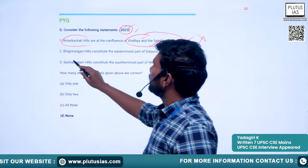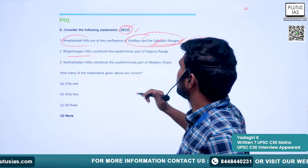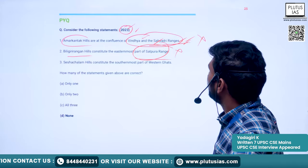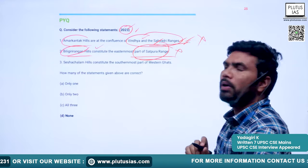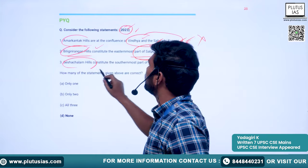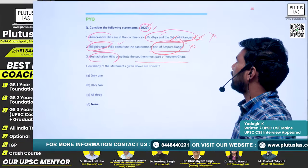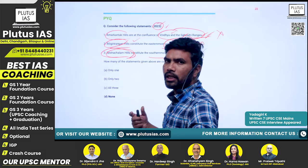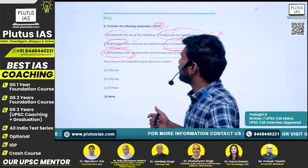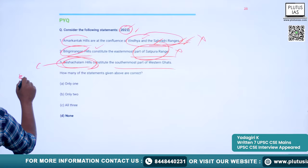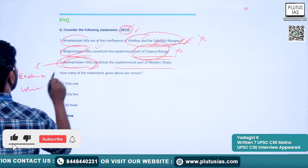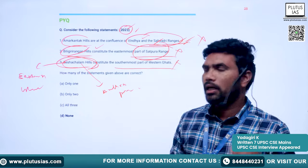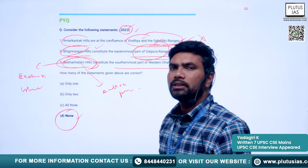The 2023 question asks to consider three statements. Statement 1: Amarkantak Hills are at the confluence of Vindhya and Sahyadri Ranges — this is incorrect, as there is no such confluence and Amarkantak Hills are not in either of these ranges. Statement 2: Biligiri Rangan Hills constitute the easternmost parts of the Satpura Range — also incorrect. Statement 3: Seshachalam Hills constitute the southernmost parts of the Western Ghats — also incorrect; Anaimudi in Kerala constitutes the southernmost part of the Western Ghats, while Seshachalam Hills are part of the Eastern Ghats in Andhra Pradesh. The correct answer is option D: none of the above statements are correct.